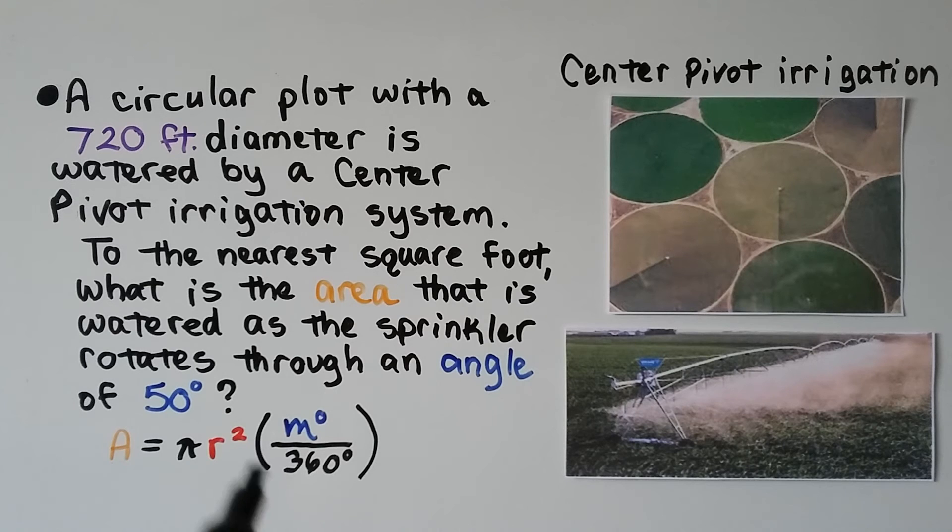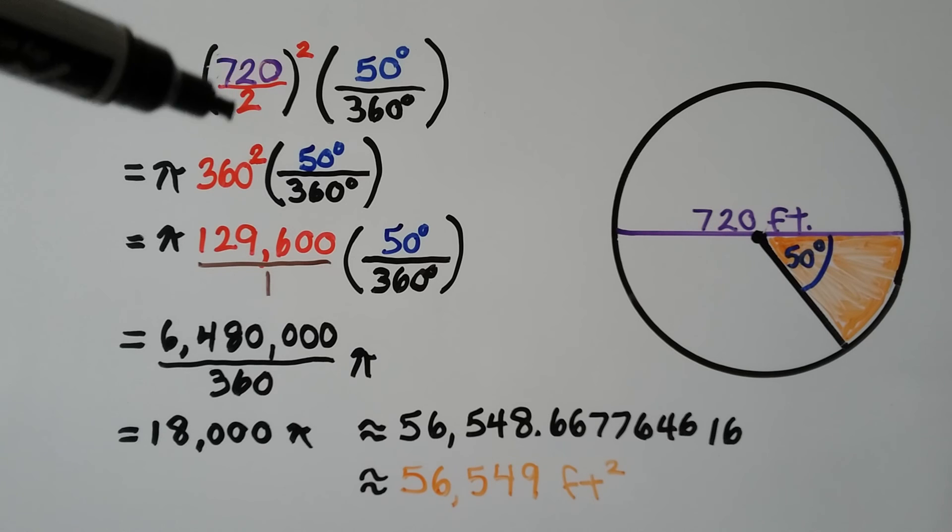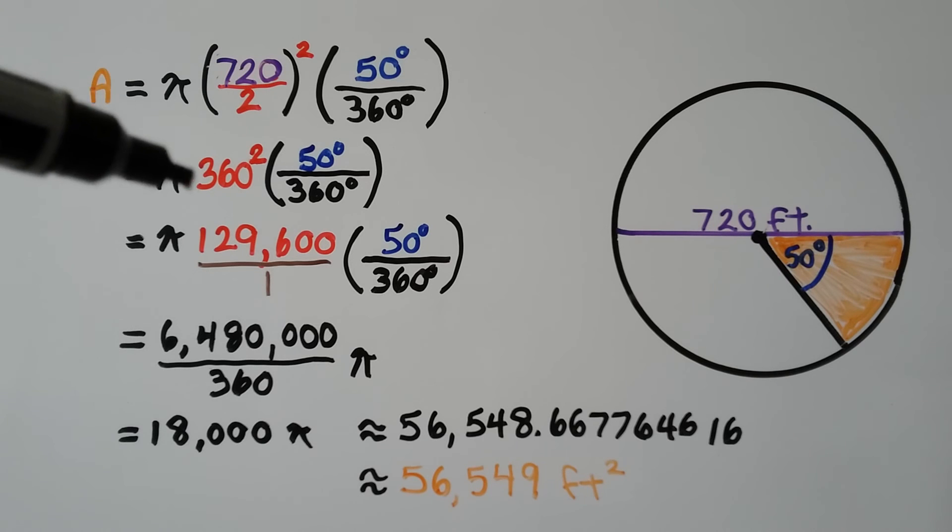We have our formula, and we're going to put this 50 where that m degrees is. It told us our diameter was 720 feet, and that's two radii. So to find the radius, we would just divide that by two. That needs to be squared for our r squared.